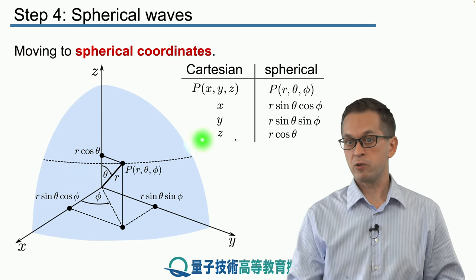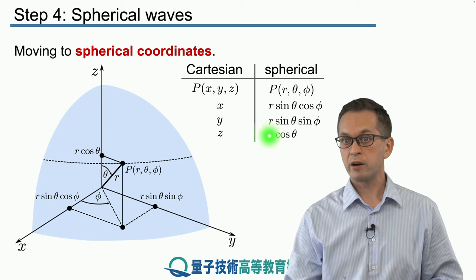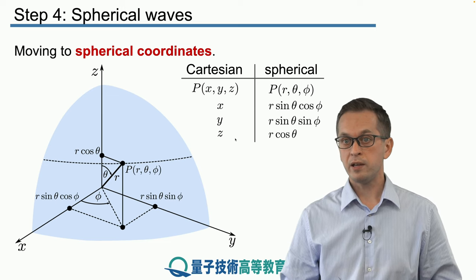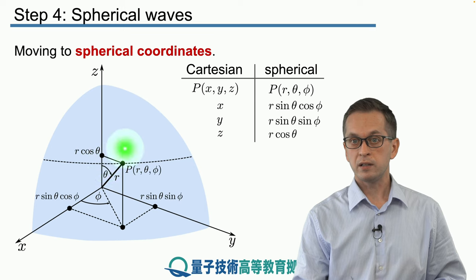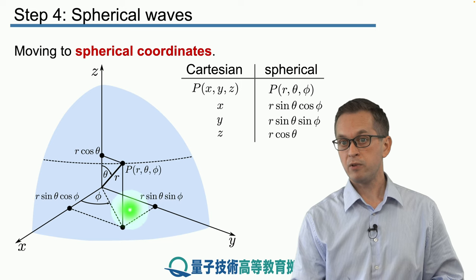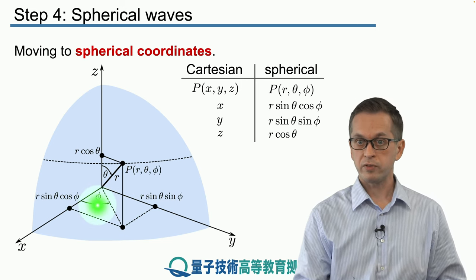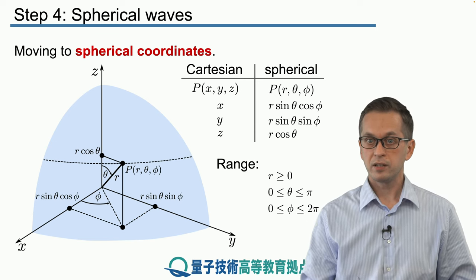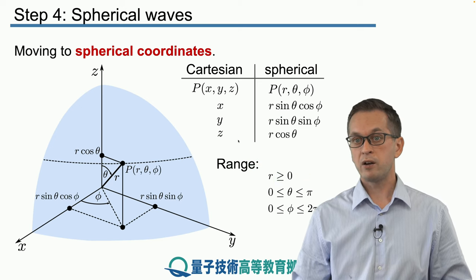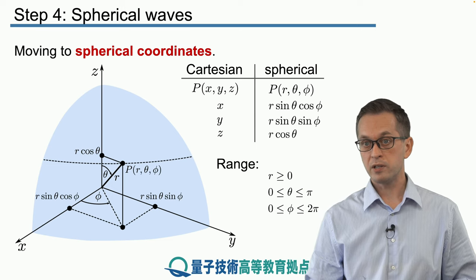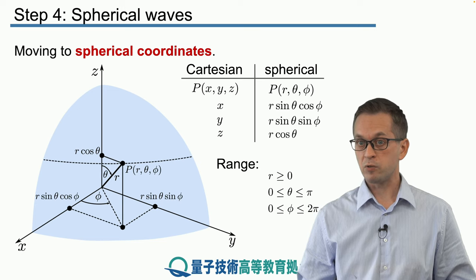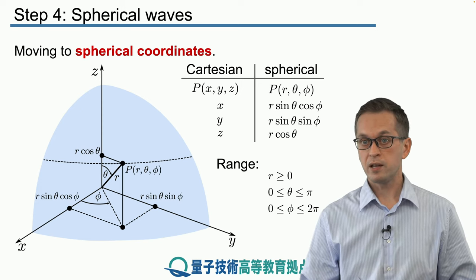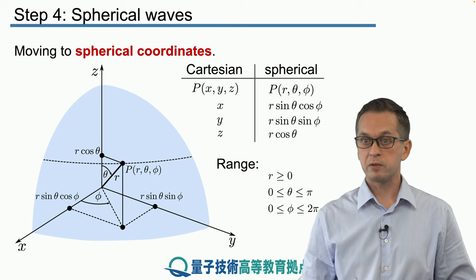The z Cartesian coordinate corresponds to r times cosine theta — we simply project r onto the z-axis. To get the x and y Cartesian coordinates, we first project vector r onto the x-y plane, then take cosine of phi for x or sine of phi for y. The ranges differ from Cartesian coordinates: r goes from zero to positive infinity, theta is between zero and pi, and phi goes all the way around from zero to two pi.